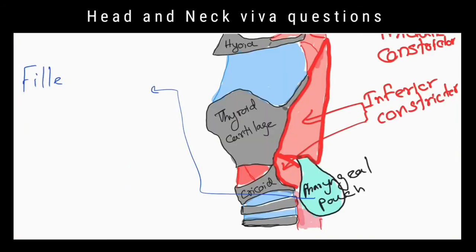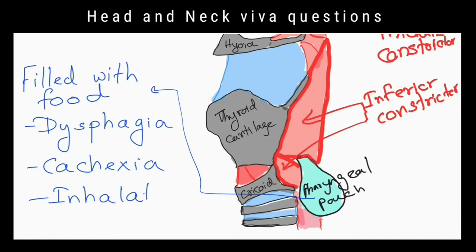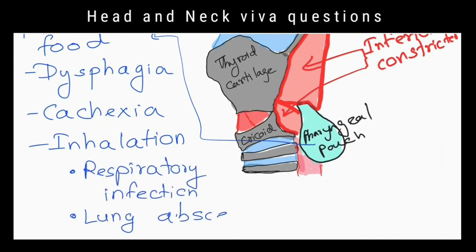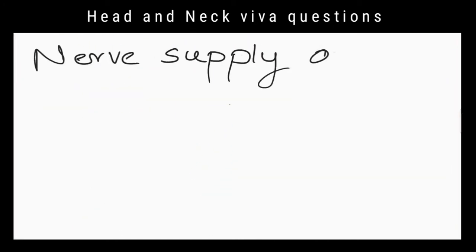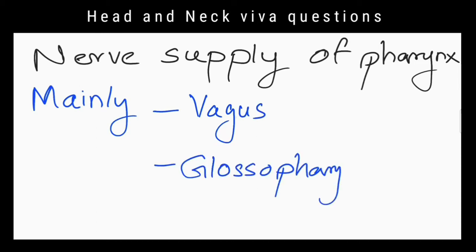What are the consequences of it? It can be filled with food and cause dysphagia. Inhalation of that food material into the bronchi can cause respiratory infections and lung abscesses. What is the nerve supply of the pharynx? Mainly by the vagus and glossopharyngeal nerves.